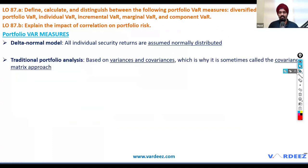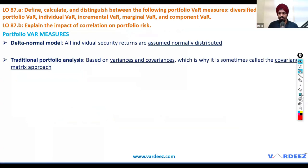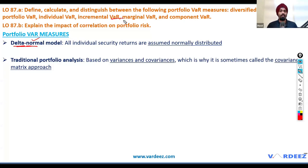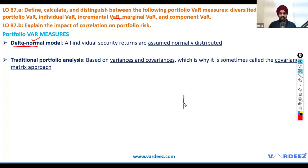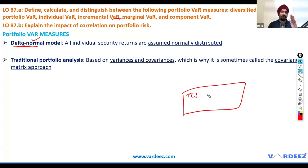The first learning objective: define, calculate, and distinguish between portfolio VAR measures. We are talking at a portfolio level. The curriculum notes two things: first, we'll be using delta normal models. We are assuming that all securities — TCS, IBM, Tesla, Apple — have normally distributed returns.